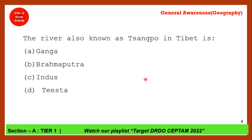Next question: Which river is also known as Sangpo in Tibet? The correct answer is option B — Brahmaputra. You may have heard of it as Yarlung Tsangpo in Tibet. When it enters Arunachal Pradesh it is known as Siyang or Dihang.